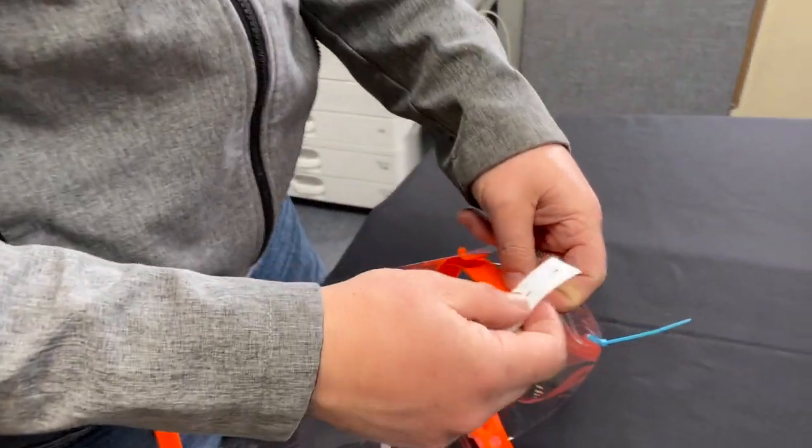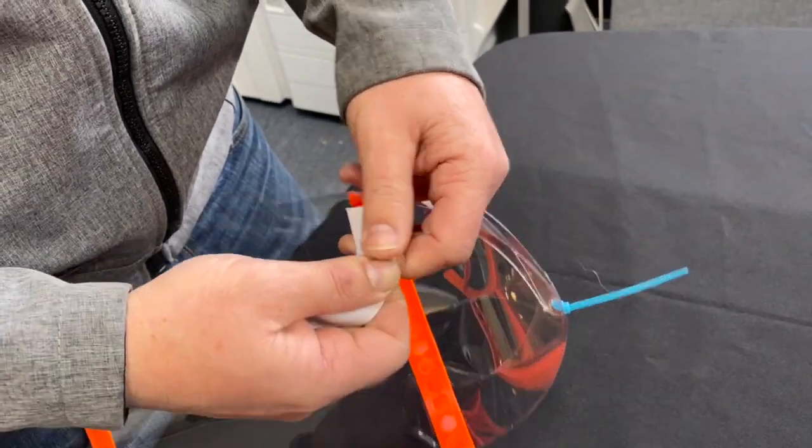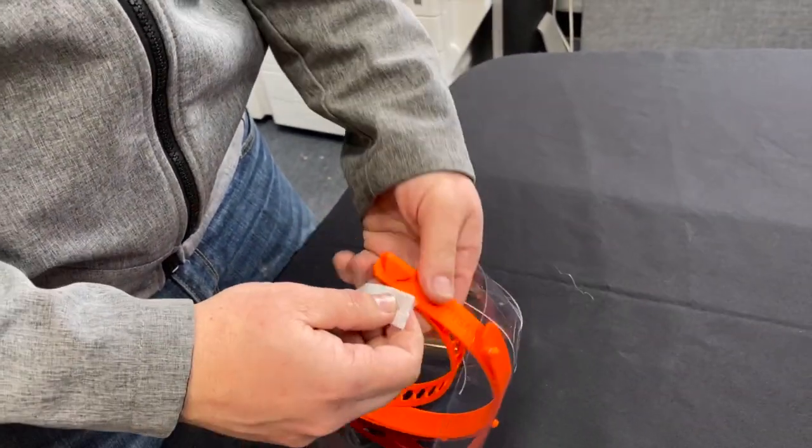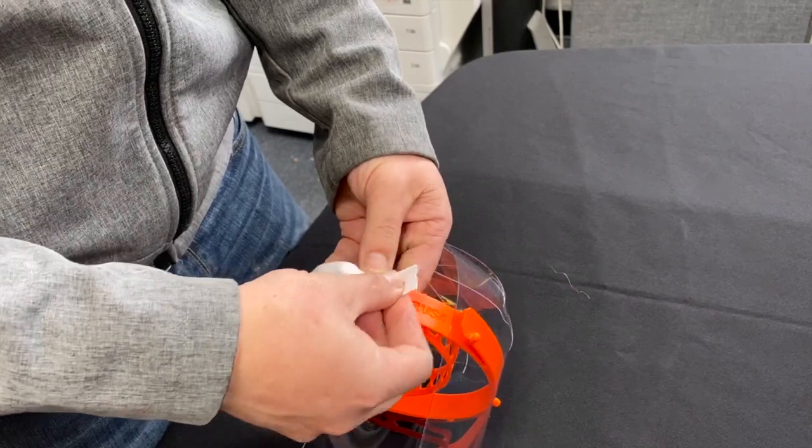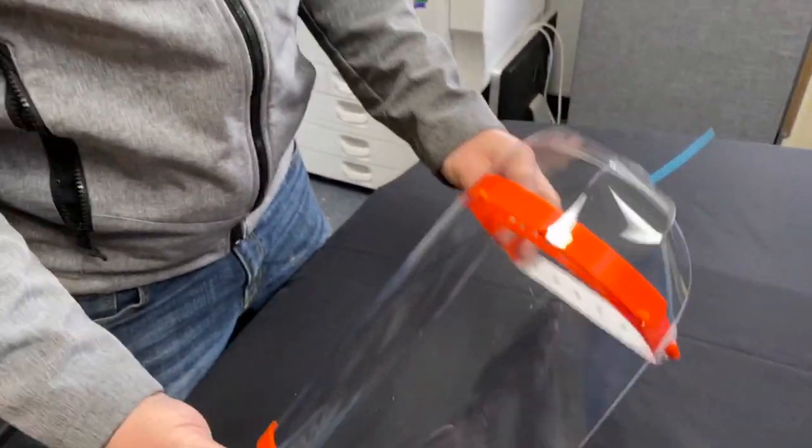Many types of elastic will work. This is buttonhole elastic. Just hook it in place and pull it over the far side. Hook the other side in place and pull it over as well and that's assembled and ready to use.